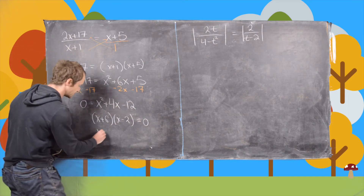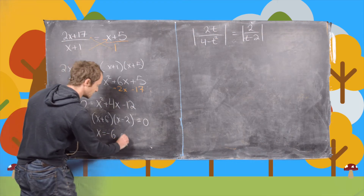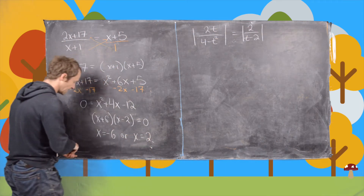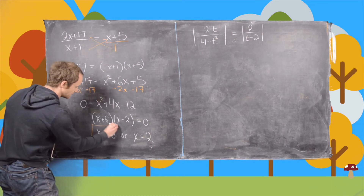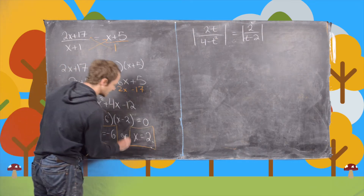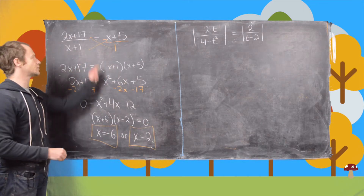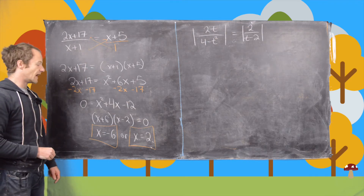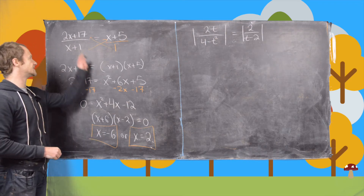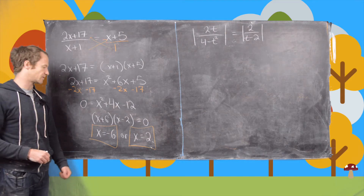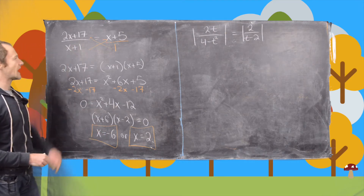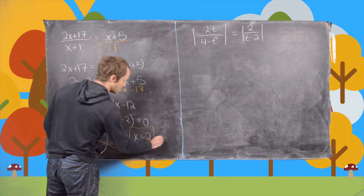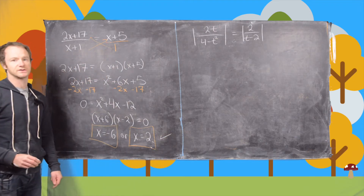We get solutions x = −6 or x = +2. Now we want to check these solutions in the original equation to make sure they make sense — what would make them not make sense is getting a 0 in the denominator after plugging them in. Both are okay in the original equation, so we keep both of them. These are our two solutions.